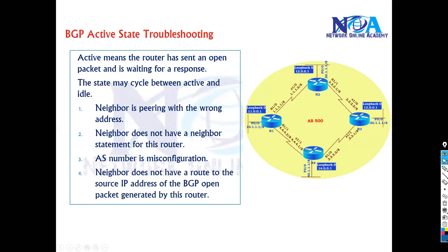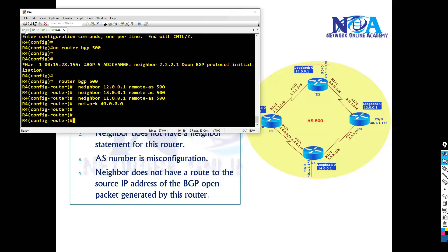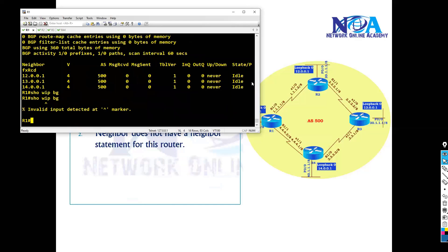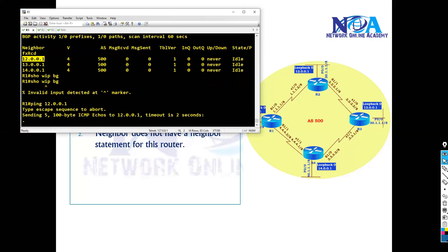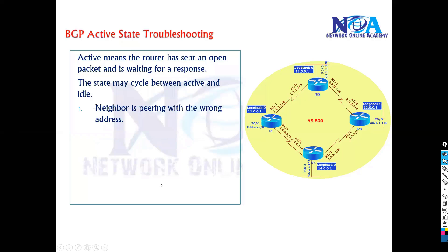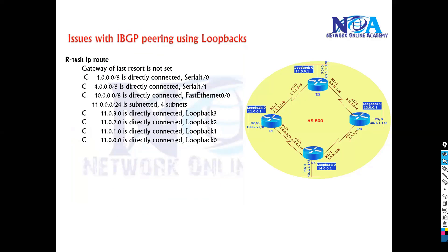The most likely reason here is the fourth issue: the neighbors do not have a route for the source IP address. When troubleshooting BGP and the neighbor state is idle or active, the first thing you must check is reachability — try to ping. If you can ping, you have reachability; if not, there are reachability issues. In my case, even if you try to ping to the .13 or .14 loopback networks, the ping will not work.